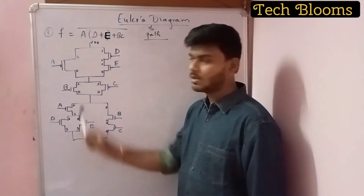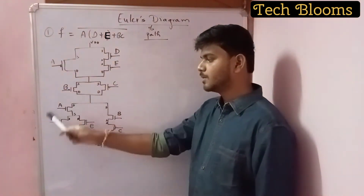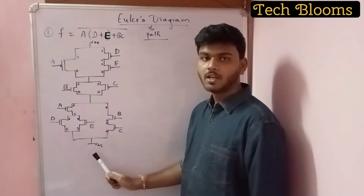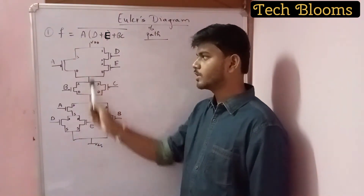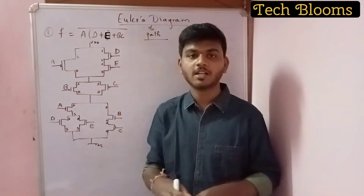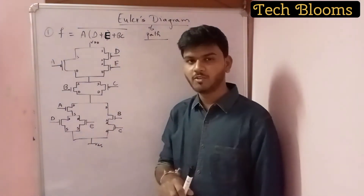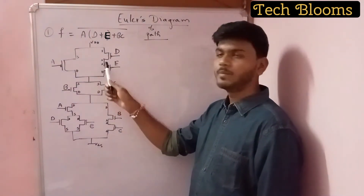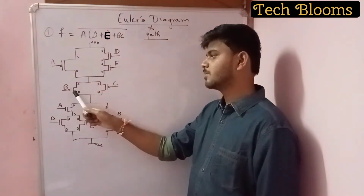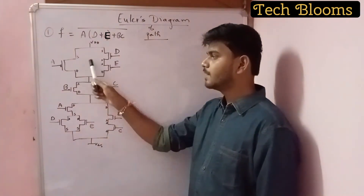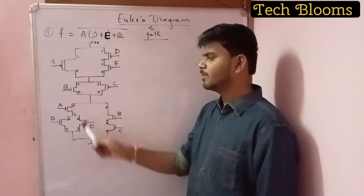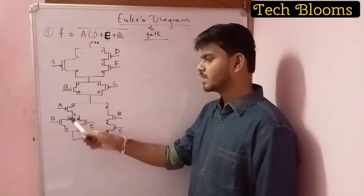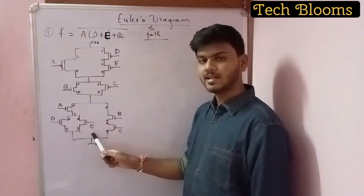I have drawn the CMOS logic. The above part will be the PMOS and the below will be the NMOS. This is the PMOS logic for this expression and this is the NMOS logic. Basically we can see that A is in parallel with D and E, and B and C are both in parallel and they are in series with A, D, and E. NMOS is just the inverse of that — A is in series with D parallel E. So it is just the opposite of PMOS and NMOS.